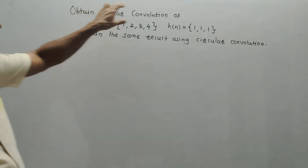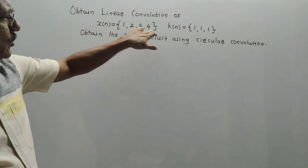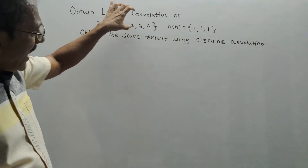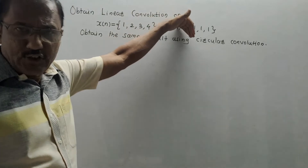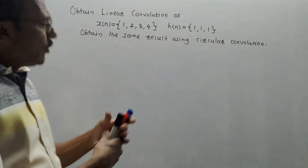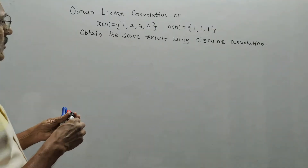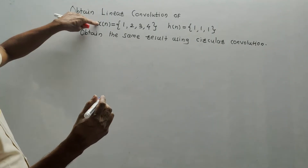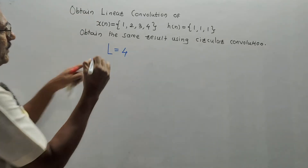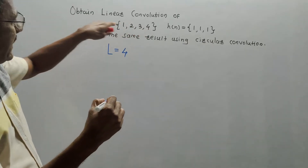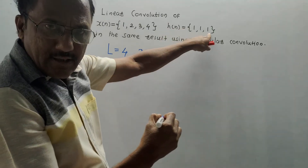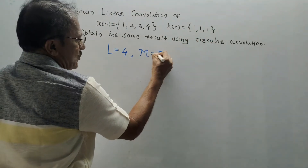The problem is: obtain the linear convolution of x(n) = {1, 2, 3, 4} and h(n) = {1, 1, 1}. If an arrow is not mentioned in any sequence, by default it is at the first position. Also obtain the same result using circular convolution. The number of samples in x(n) is L = 4, and the number of samples in h(n) is M = 3.